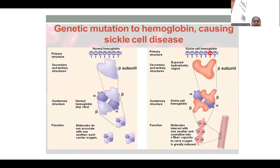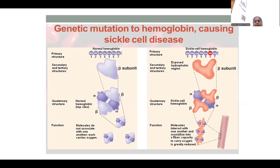This diagrammatic representation explains what happens to the protein structure of hemoglobin. In a normal individual, the sixth amino acid of the hemoglobin chain is glutamic acid. The primary structure is linear, and then the secondary and tertiary structures fold correctly to form hemoglobin — two alpha polypeptides and two beta polypeptides clump together. These molecules do not associate abnormally with one another and efficiently carry oxygen.